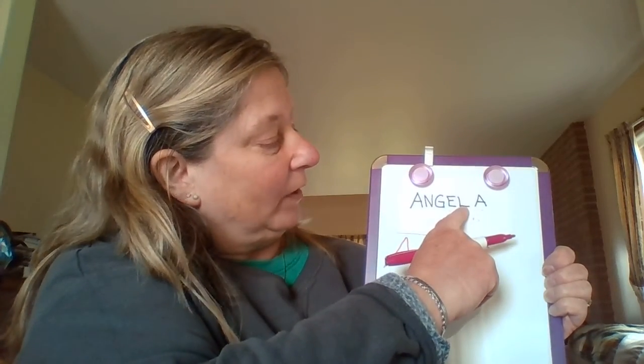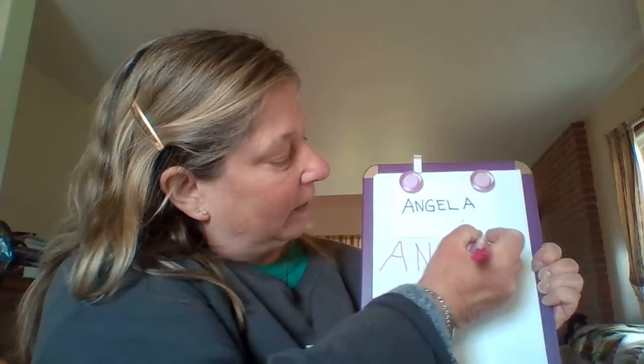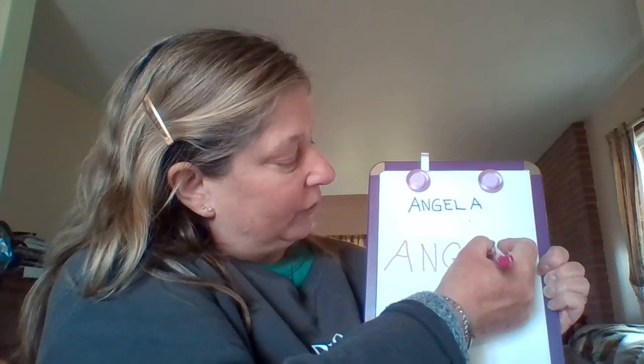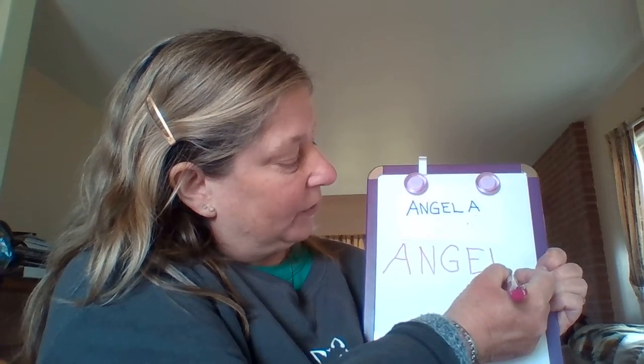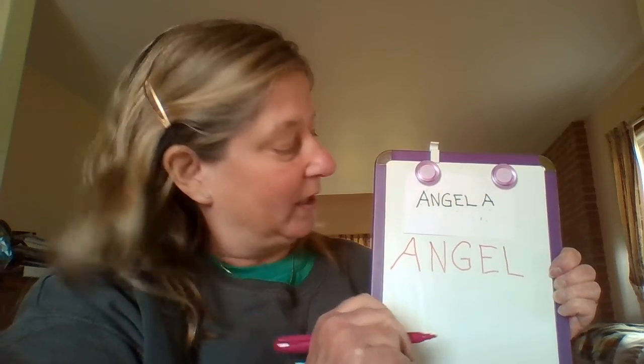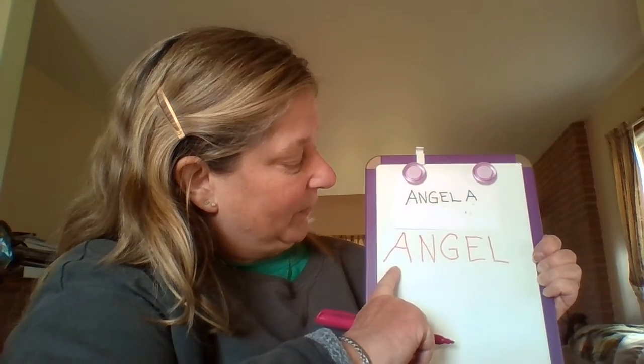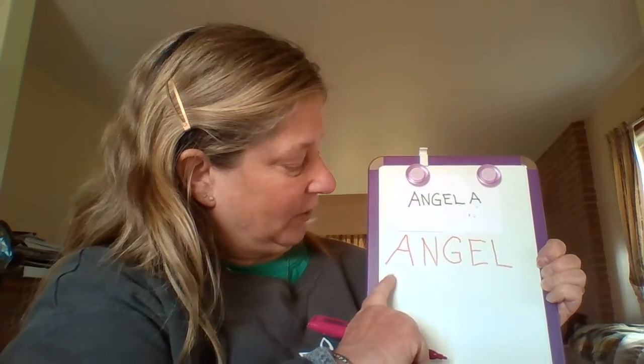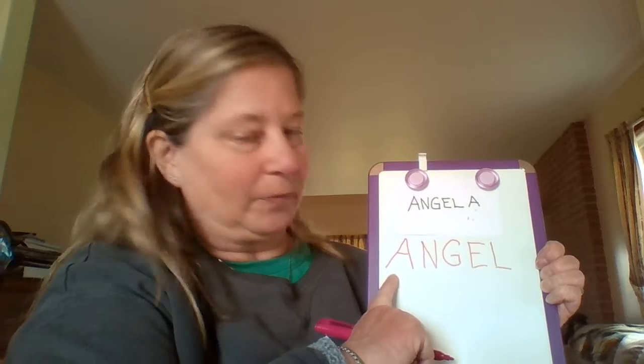We're gonna do our uppercase L. We're gonna start at the top — straight line down, little line left to right. Now it's your turn — straight line down, little line left to right. Awesome job, great job guys! Let's look at our word. We have Angel. We know we start over here and we read it left to right — it says Angel. What name did we write today? Angel. Great job.